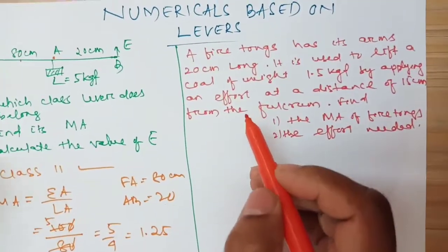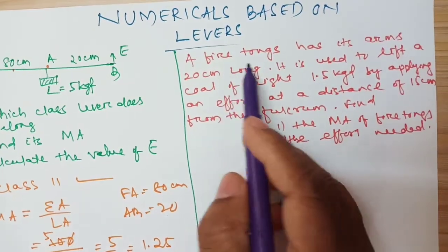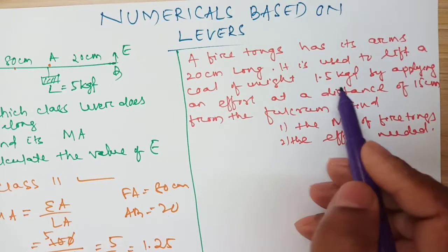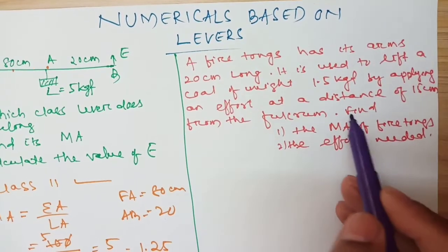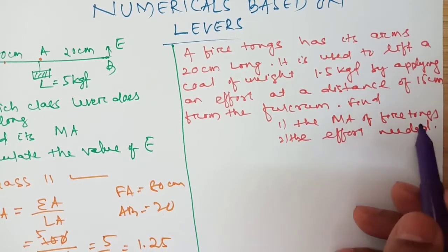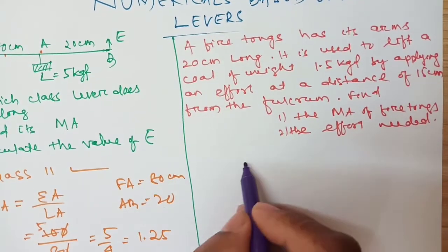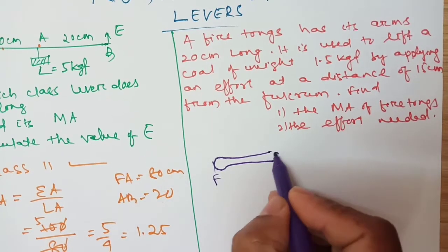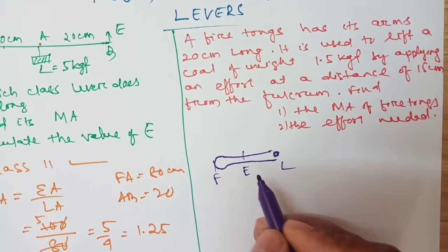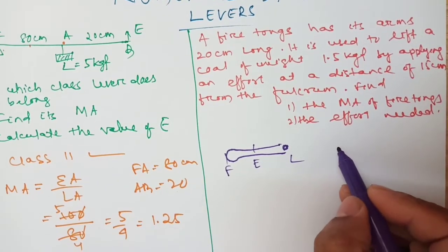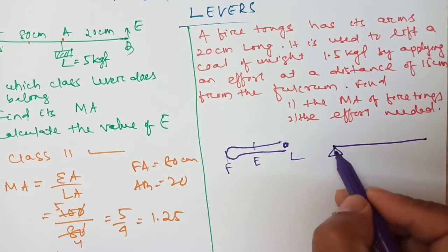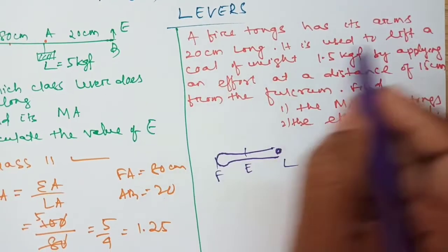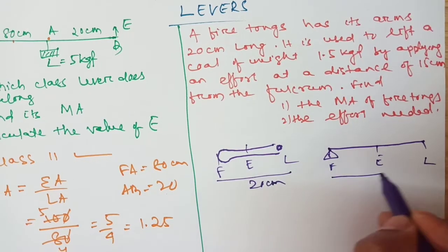Now come to the second numerical. A fire tong has its arms 20 cm long. It is used to lift a coal of weight 1.5 kgf by applying an effort at a distance of 15 cm from the fulcrum. Fire tongs have fulcrum here, effort in the middle, and load at the end — this is a class 3 lever. The total arm length is 20 cm (load arm).